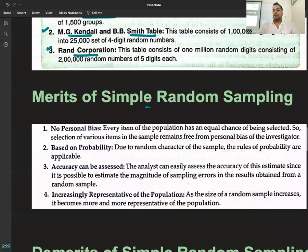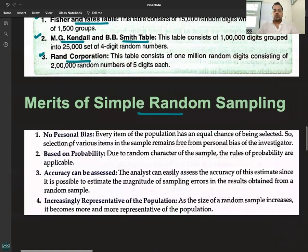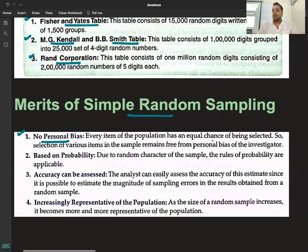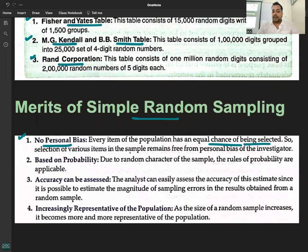Merits of simple random sampling. No personal bias. Every item of the population has an equal chance of being selected, so selection of various items in the sample remains free from personal bias of the investigator.